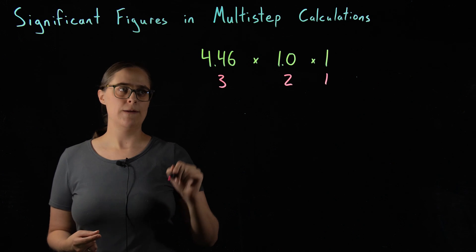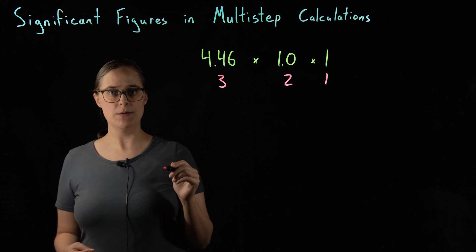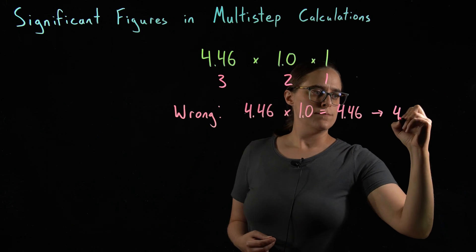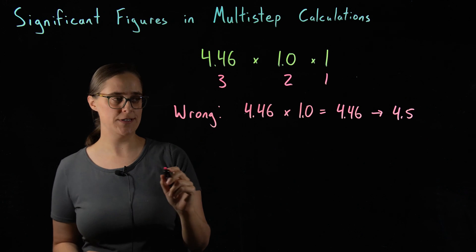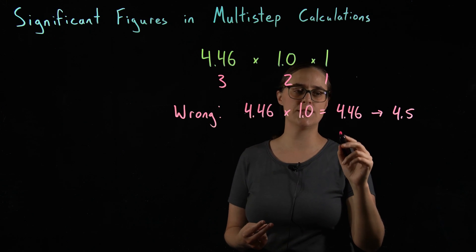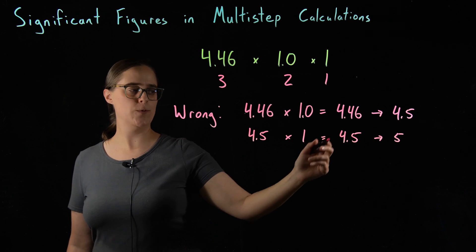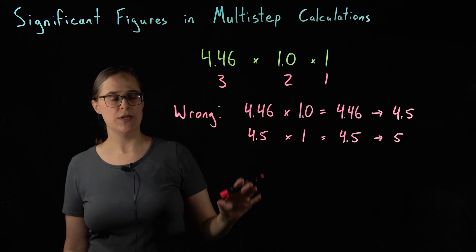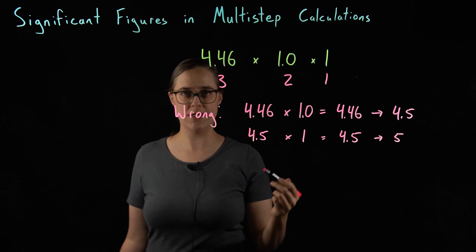I am going to do this problem twice, treating it as a more difficult problem done in 2 steps. The first time, I am going to do it wrong — rounding once after each calculation. After the first step, 4.46 times 1.0 equals 4.46. 4.46 has 3 significant figures, 1.0 has 2, so rounding mid-problem, 4.46 rounds up to 4.5, which has 2 significant figures. In the second step, 4.5 times 1 equals 4.5, but this needs to be rounded to 1 significant figure, so 4.5 rounds up to 5. This is a problem — we multiplied 4.46 by 1 but got it to round up to 5. This is wrong.